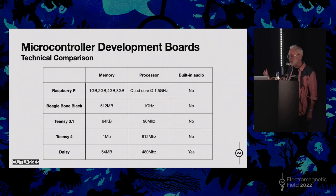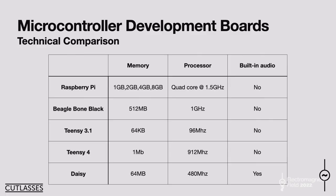There's a comparison table showing the difference in capability. The Linux-based boards at the top have loads of memory and really fast processors but are more expensive. The Teensy 3.1 only has 64K, but that's still fine if you want to do a delay or a reverb — that's enough.